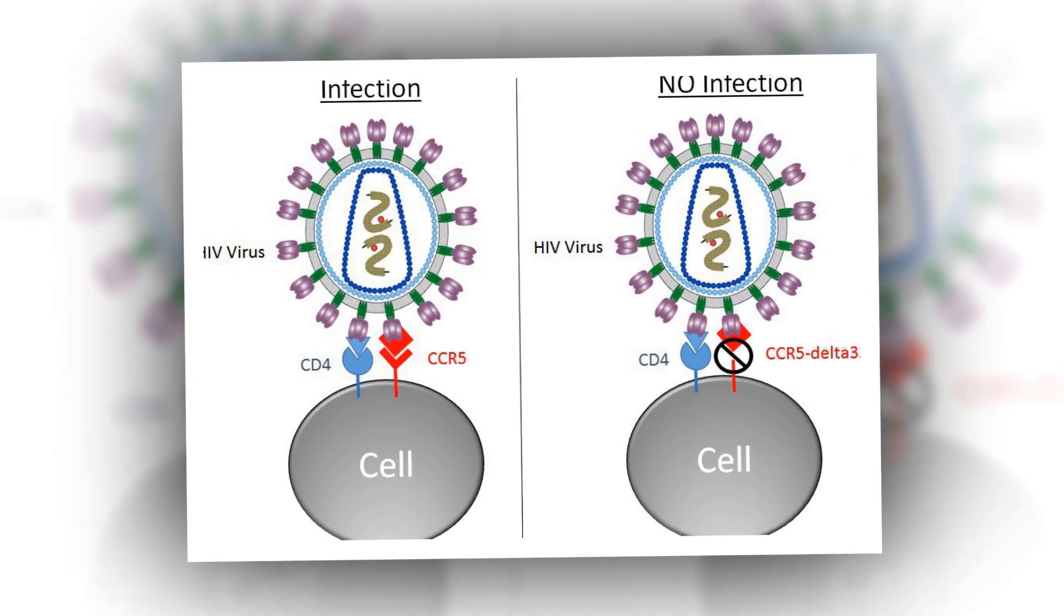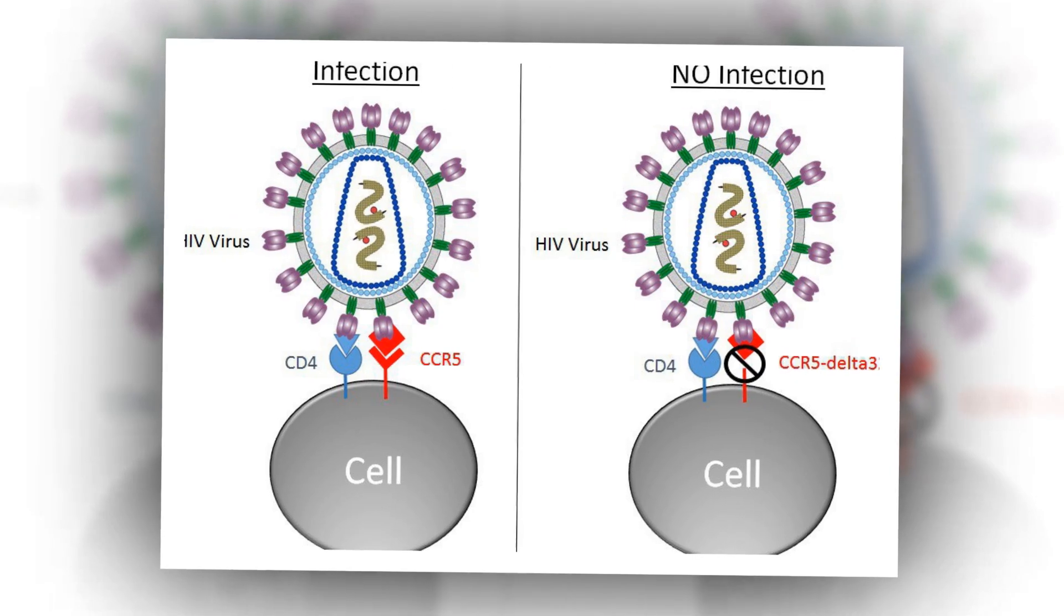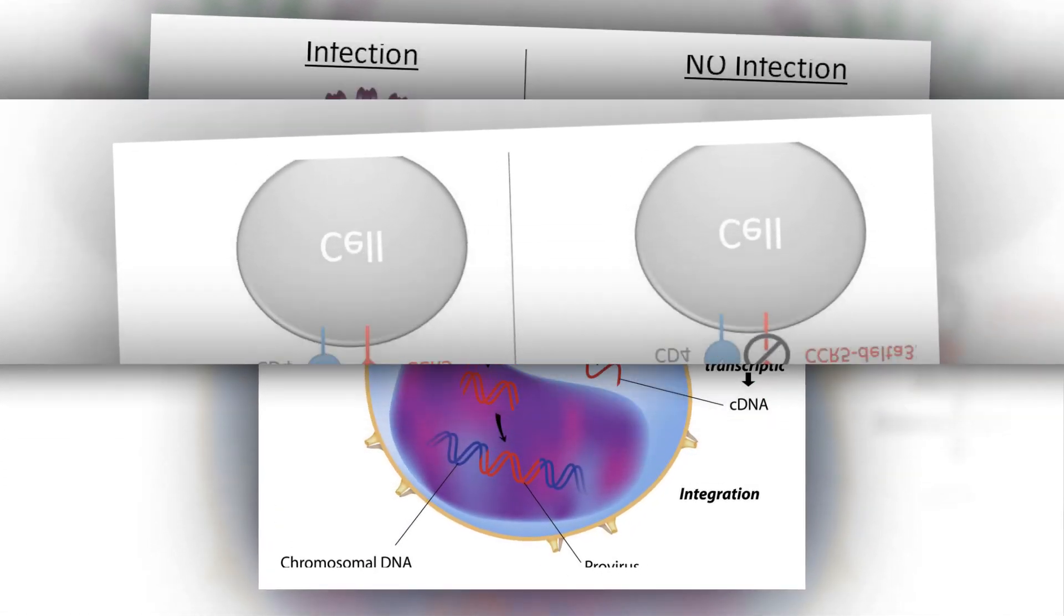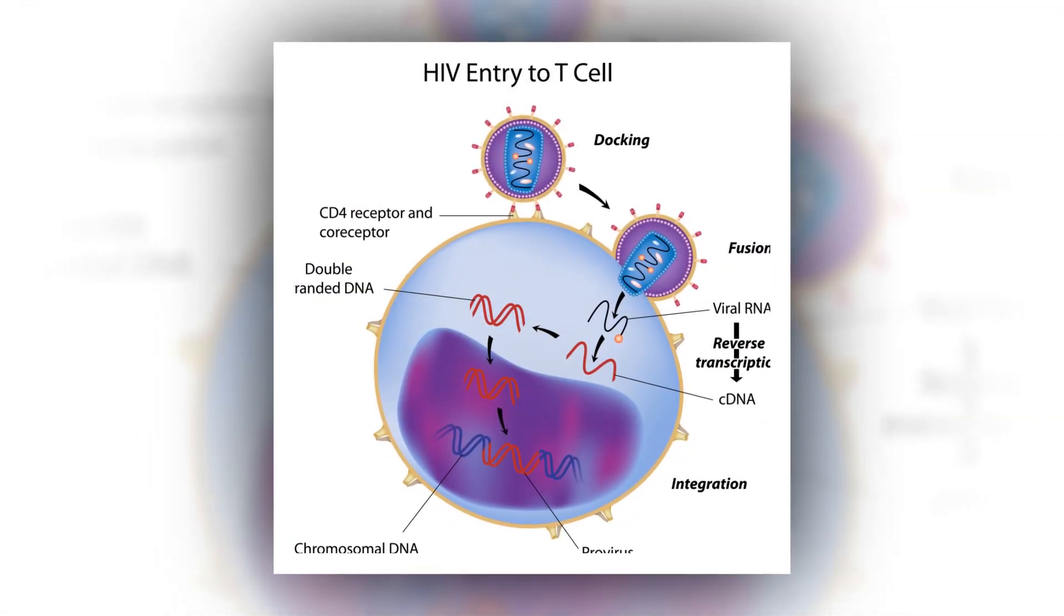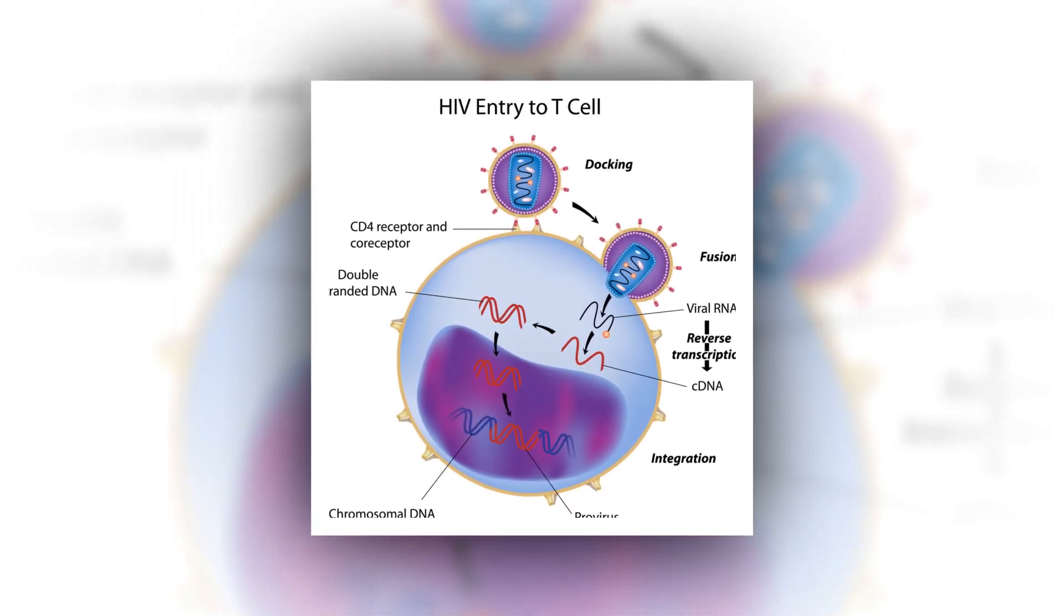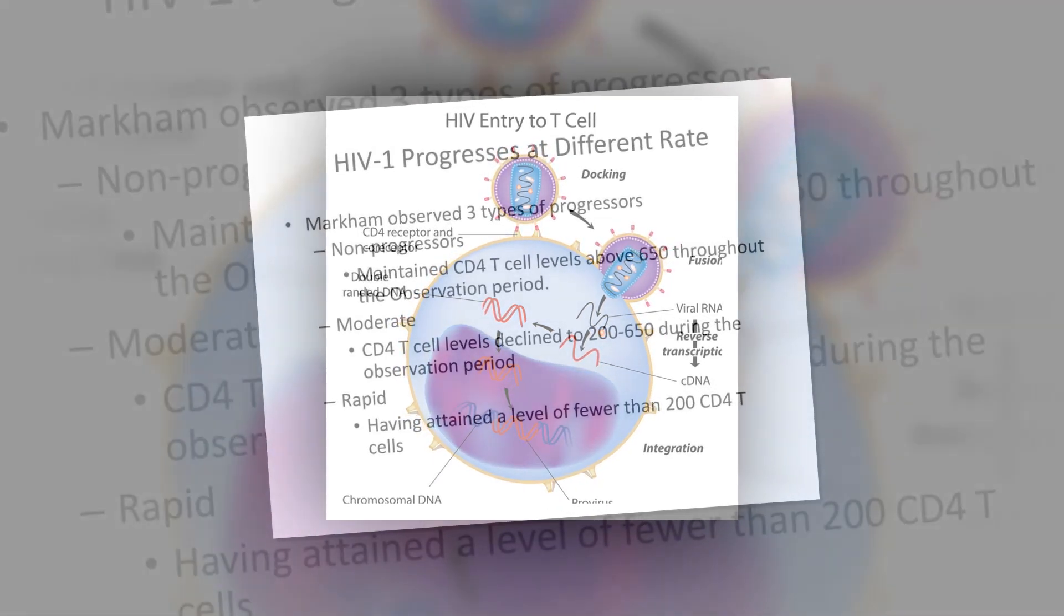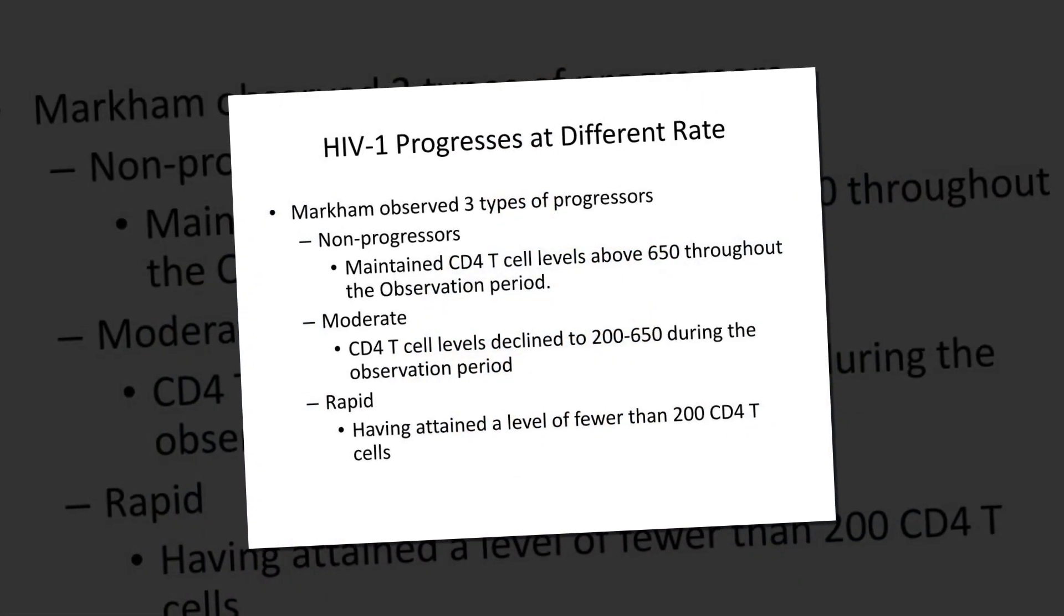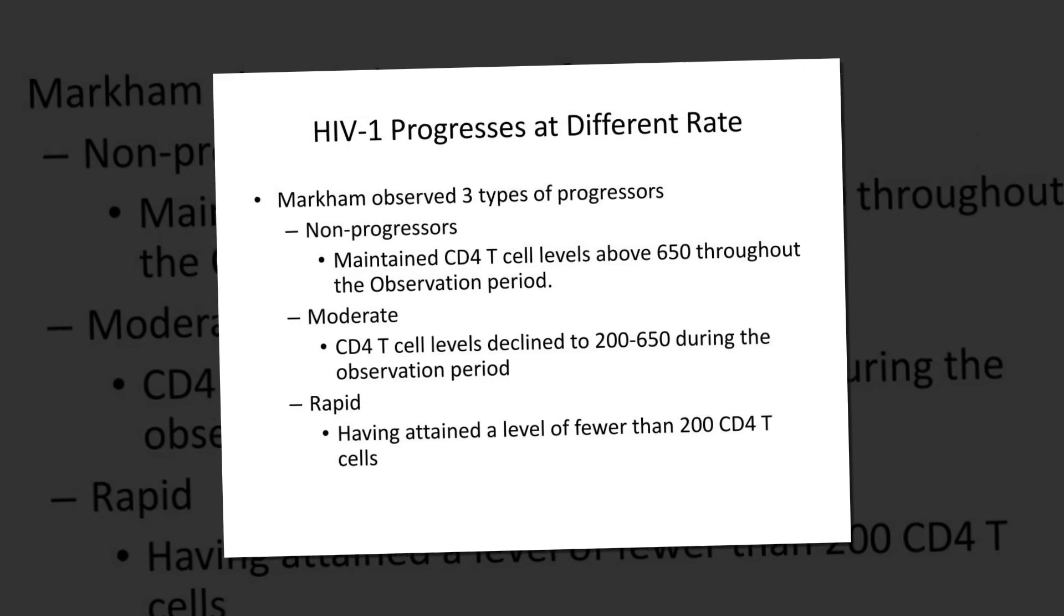The CCR5 delta-32 variant reduces the expression of CCR5 receptors on CD4 T-cells, which HIV commonly uses to enter cells. Individuals carrying this variant exhibited lower CCR5 expression and lower rates of HIV-1 infection in their cells.